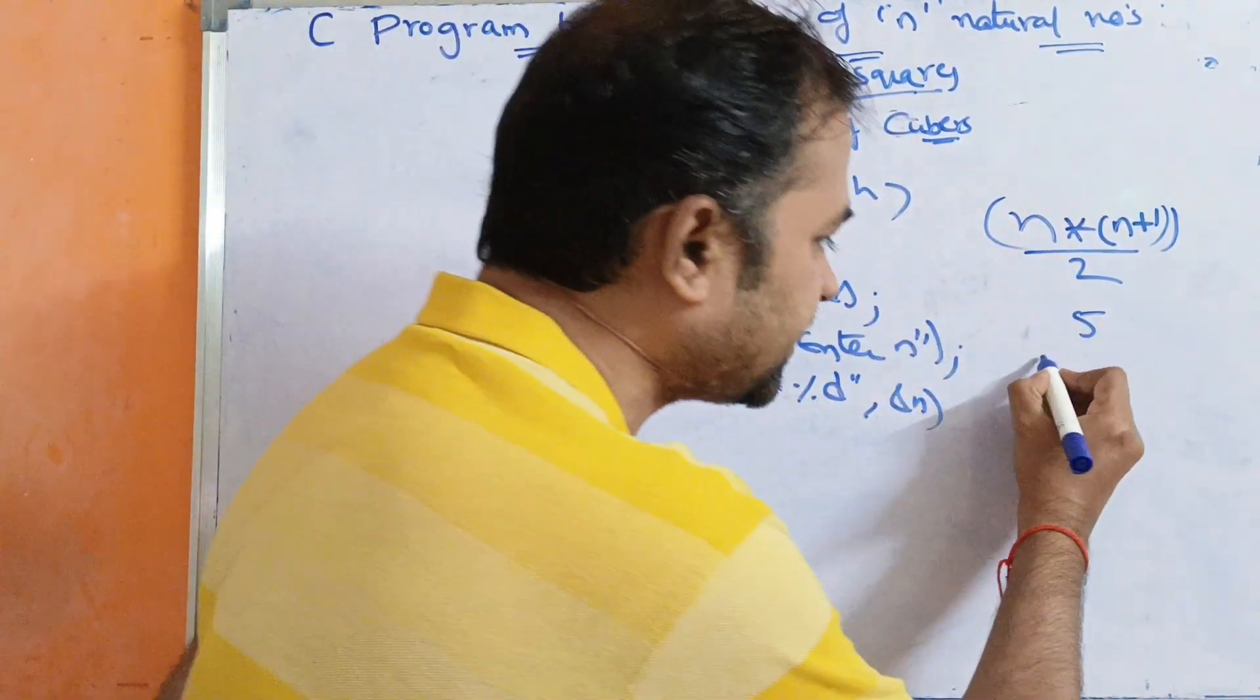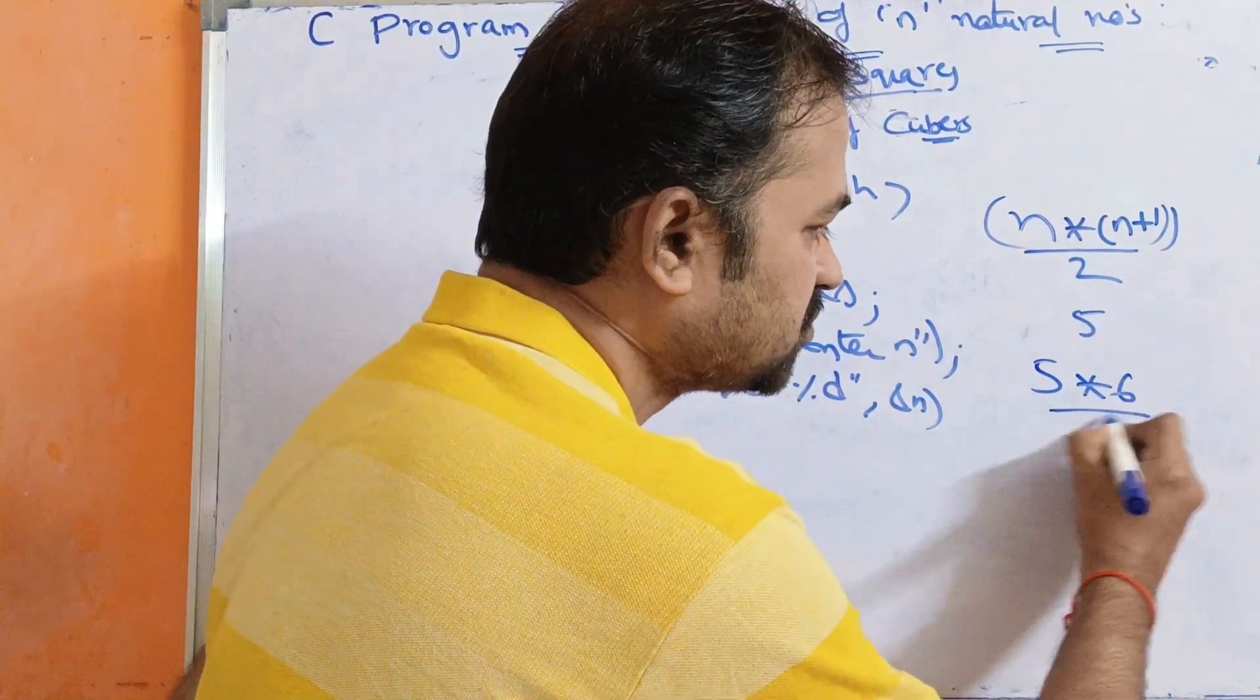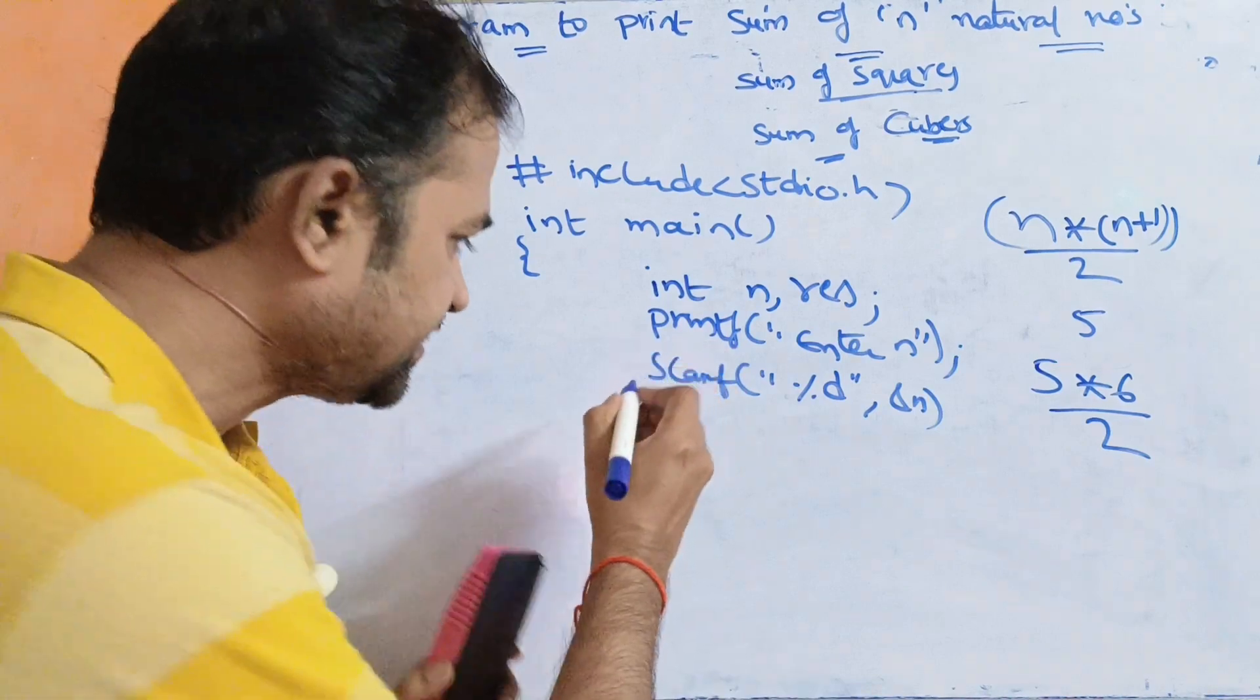Let us see whether this formula is correct or not. So 5 into (5+1) is 5 into 6, which is 30. So 30 by 2 means 15. So let us write the formula.